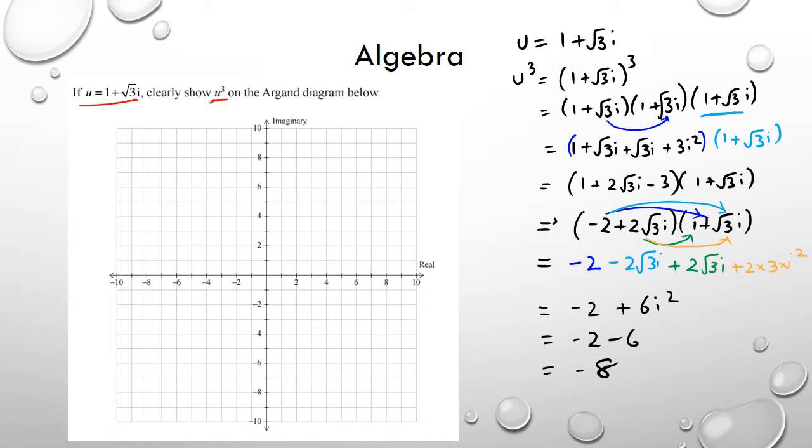-2 plus, well because it's 6i squared, 6 times -1 is -6, and so this is equal to -8. Now to draw this on the Argand diagram, because this is a complex number which can be written as -8 + 0i, so u cubed is literally going to be here. That's u cubed.